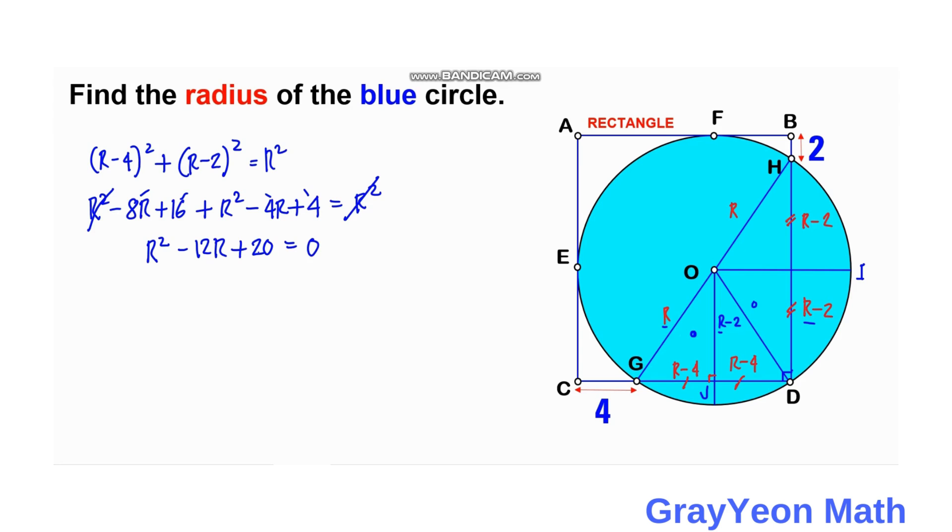Okay, so next we solve this resulting quadratic equation. This can be solved by factoring. So the factors of 20 that will give the algebraic sum of negative 12 is 10 and 2. So we have R minus 10 times R minus 2 is equal to 0.